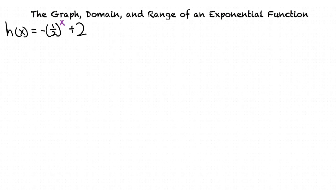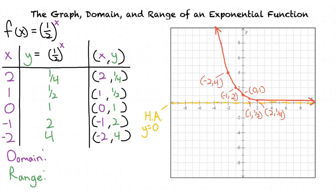Let's also do an example of a reflection transformation using h of x equals negative one-half to the power x plus 2. We first find the graph of f of x equals one-half to the power x by plotting our five points. The horizontal asymptote is y equals 0, since the y values get closer to 0 when the x values get larger but do not touch 0. As with previous graphs, the domain is negative infinity to infinity and the range is 0 to infinity, not including 0.